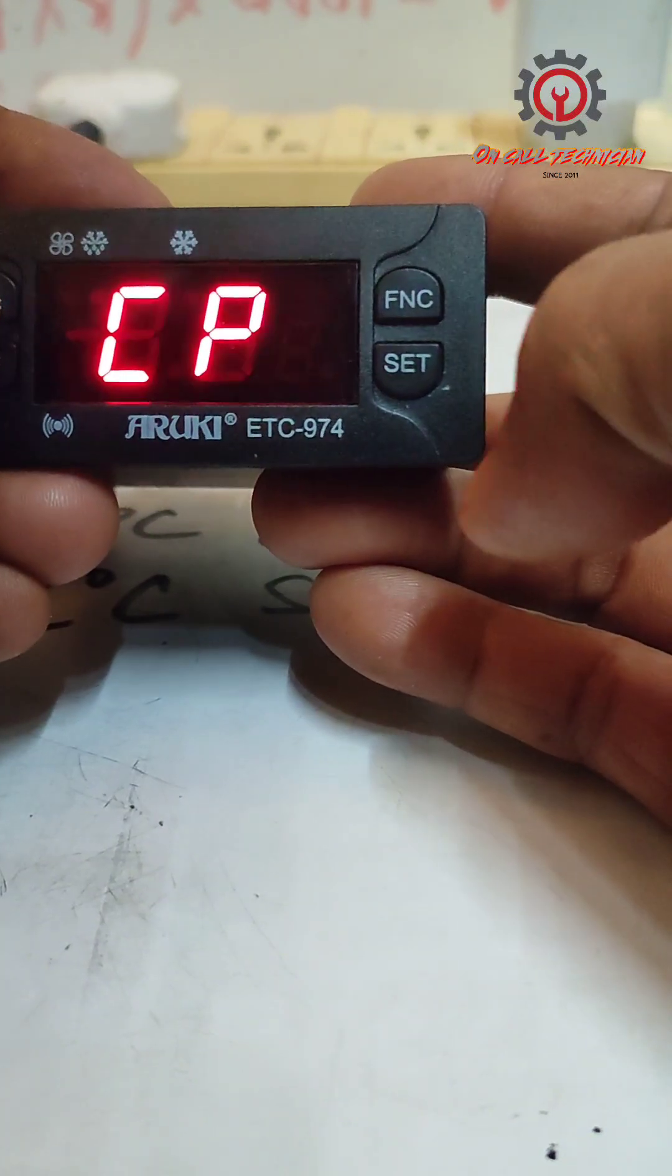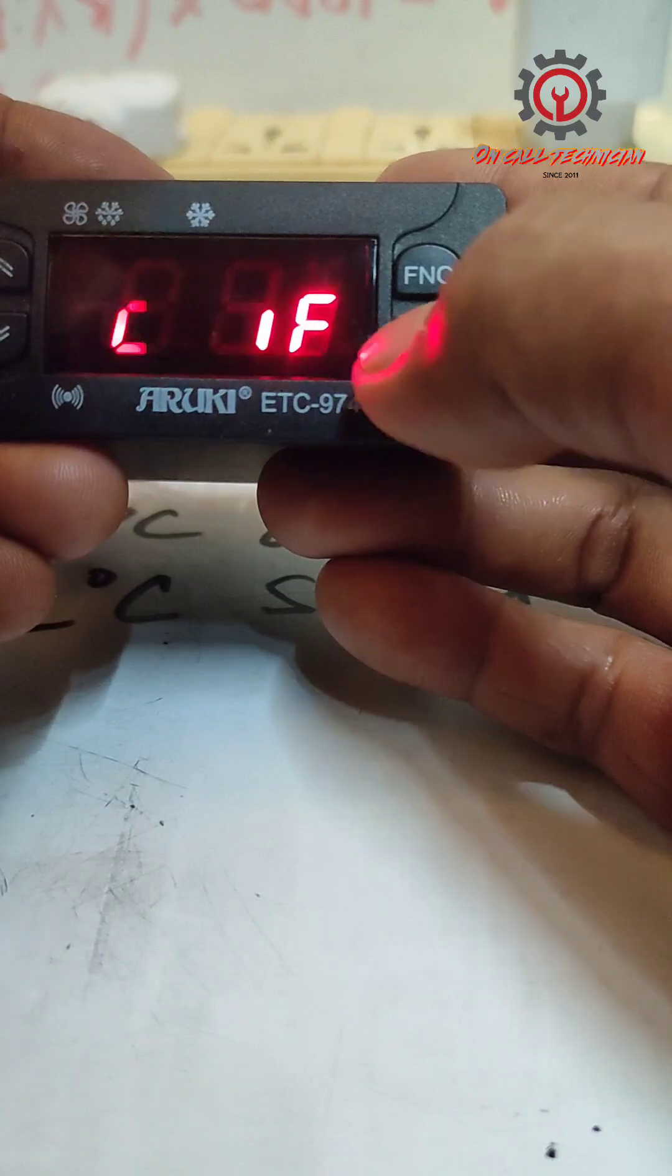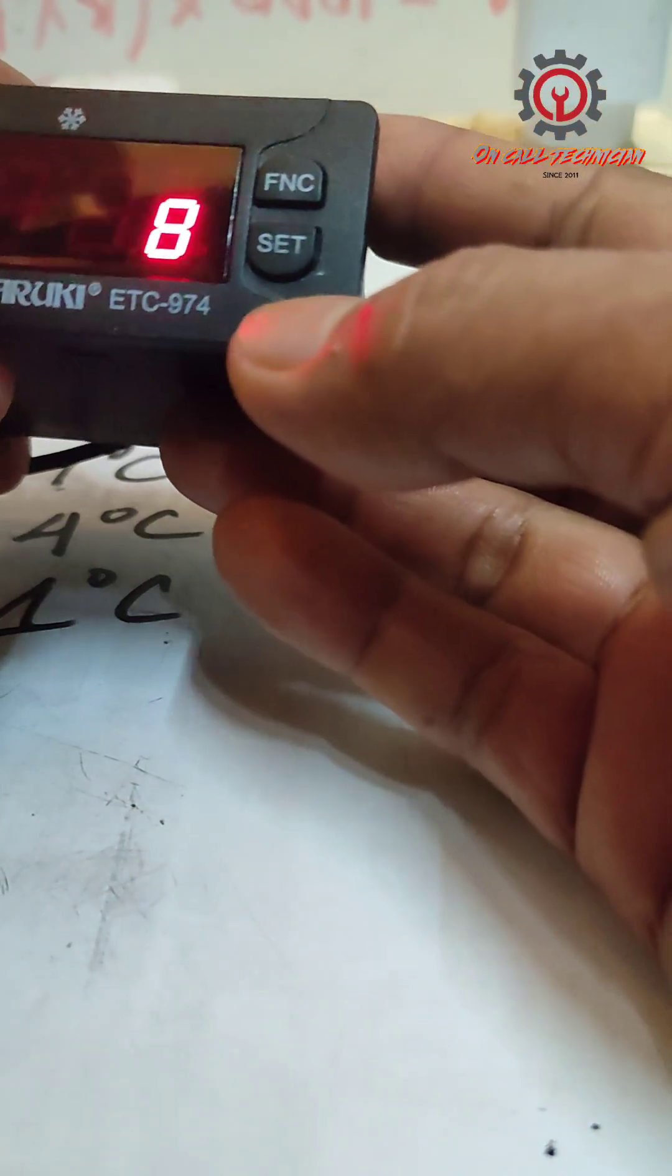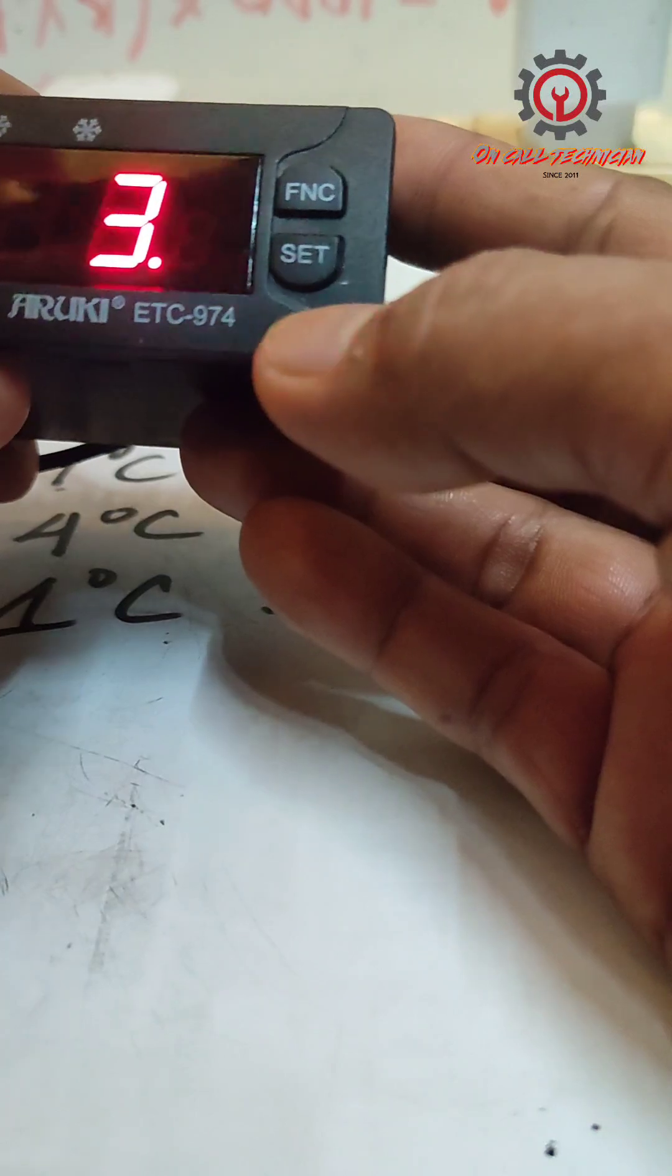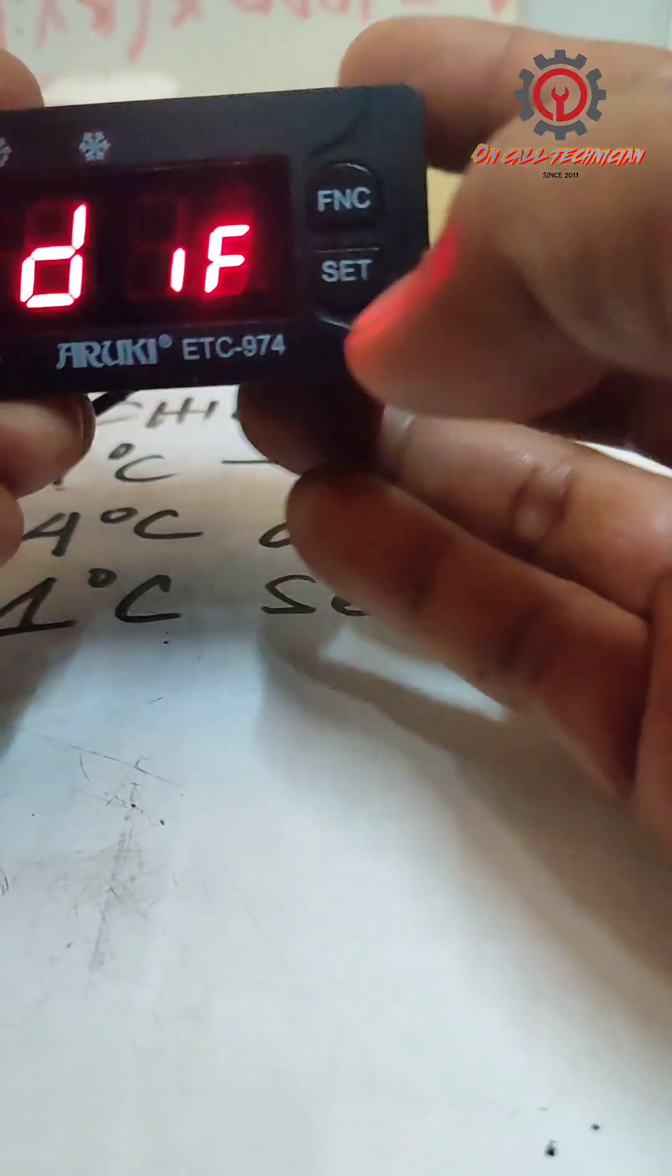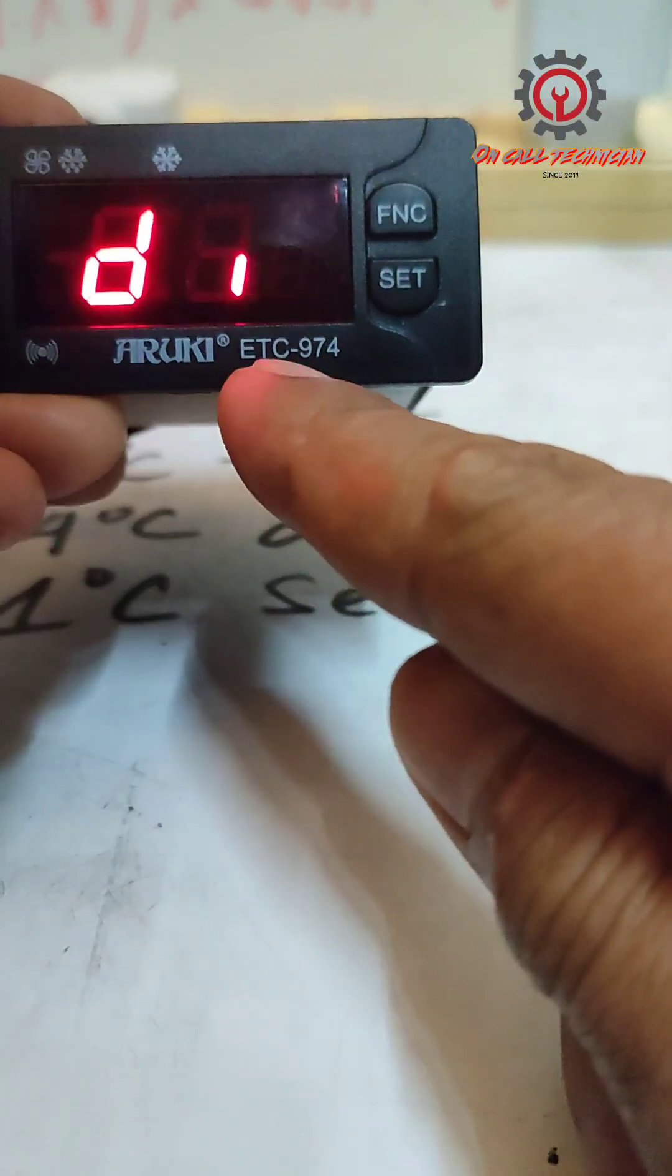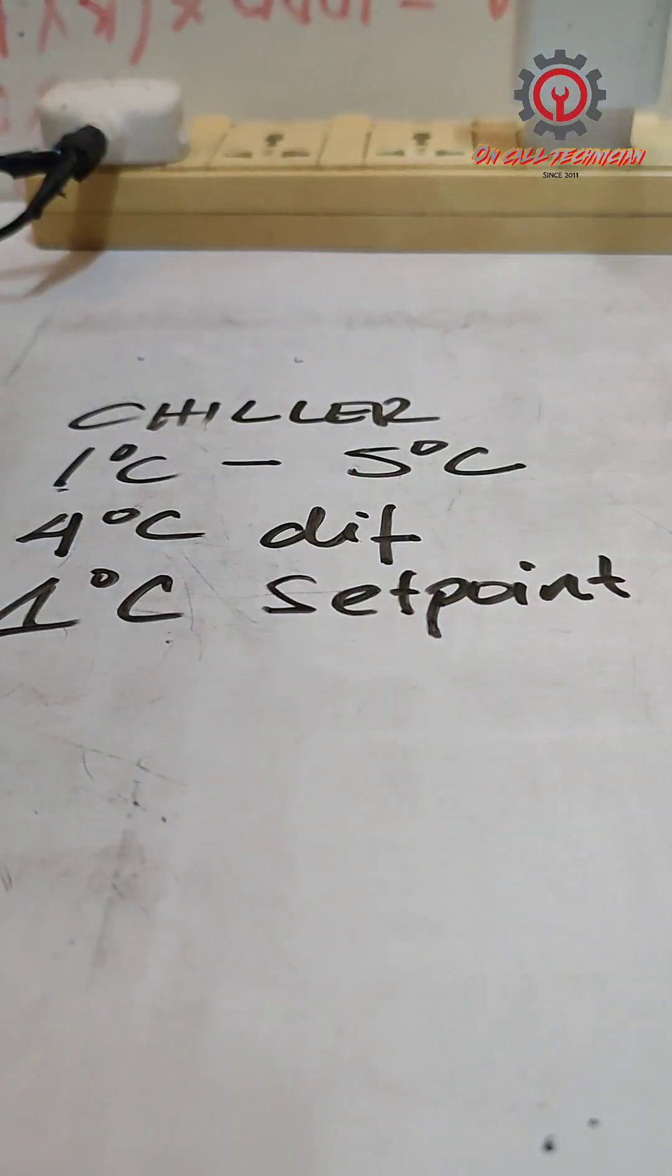Then press set again and the differential will appear. Press it again and we're going to change that into 4 degrees Celsius by pressing the up button, and press set to memorize. This AROKI ETC-974 is now in chiller setting.